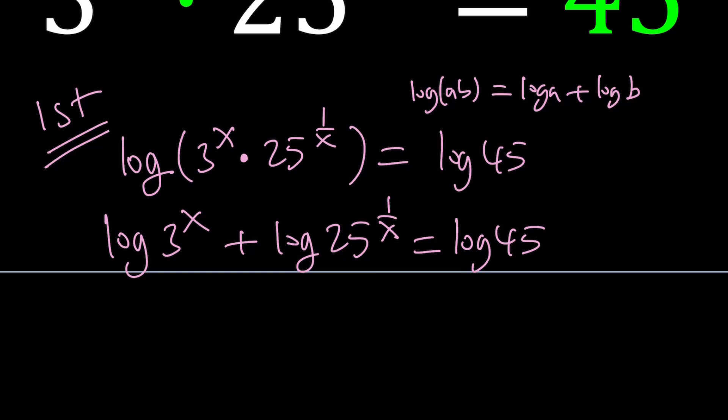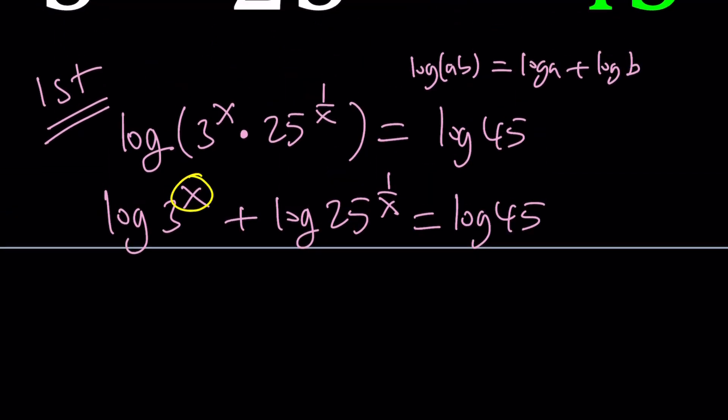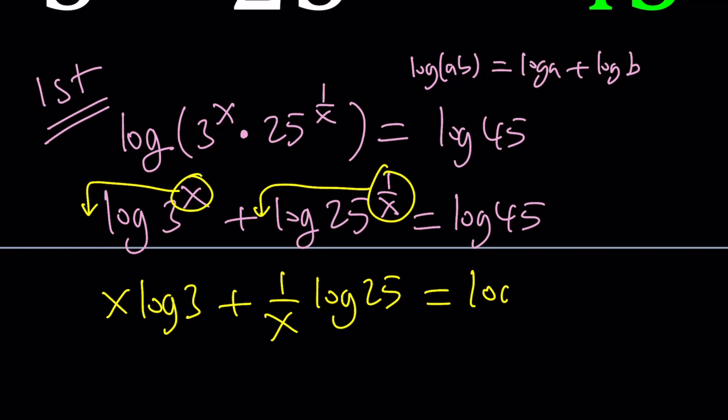Now let's go ahead and use another property of logs, which is known as the power property. So these are powers. We can go ahead and put them up in the front. In other words, we're going to bring them down. That gives us x log 3 plus 1 over x log 25 equals log 45.